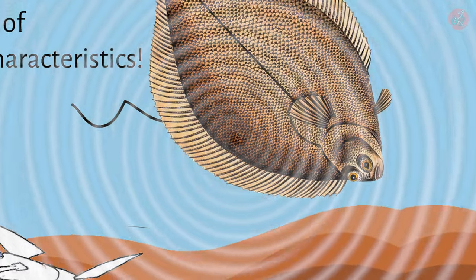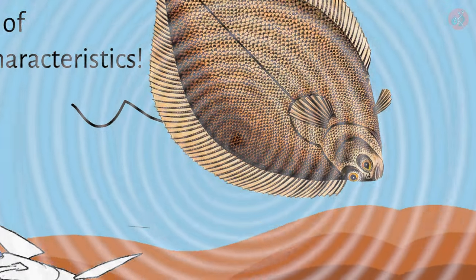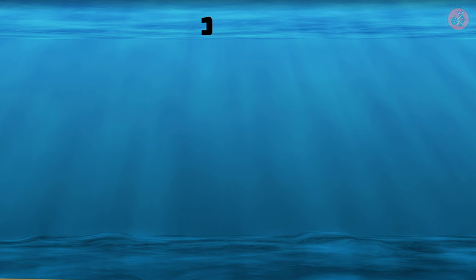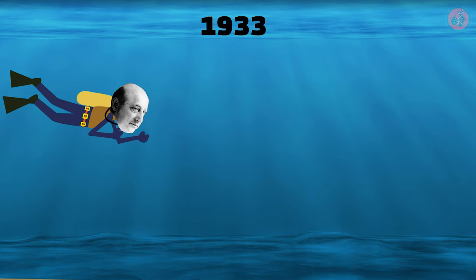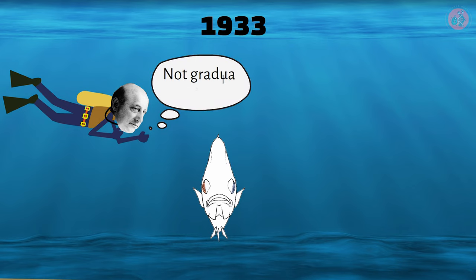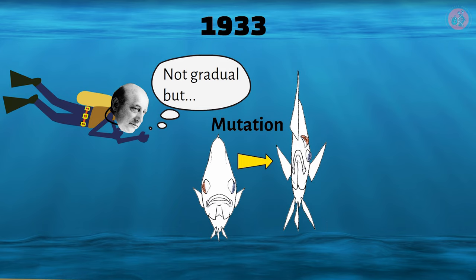This confusion persisted well into the 20th century, until 1933, when American geneticist Richard Goldschmidt suggested that the evolution of the flounder's eye was not gradual, but a rapid adaptation due to a random genetic mutation.